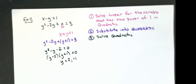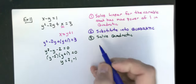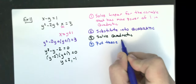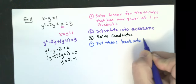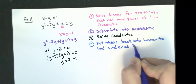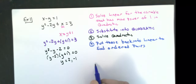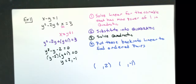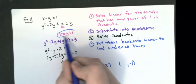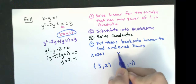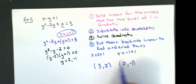Now I'm going to put these values back into the linear equation to find ordered pairs. I'll have two answers: one with a y-coordinate of 2, and one with a y-coordinate of negative 1. Using x equals y plus 1: x equals 2 plus 1, giving me 3; and x equals negative 1 plus 1, giving me 0. Those are my final answers.